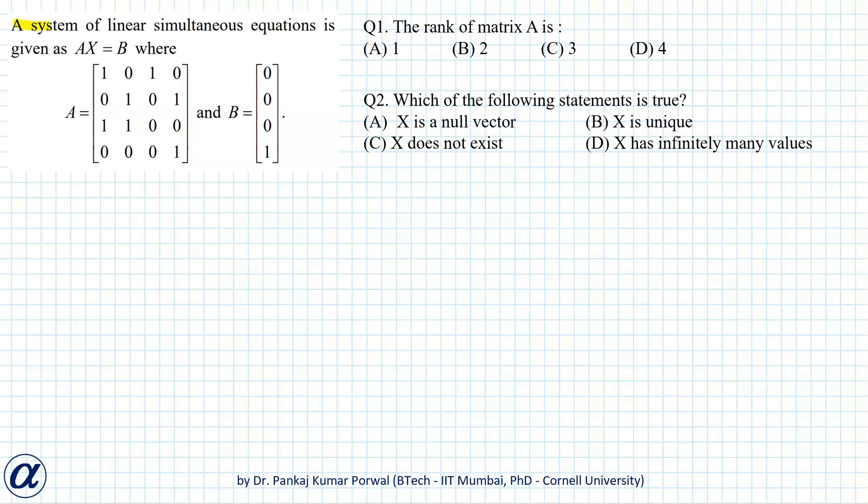In this question, we are given a system of linear simultaneous equations in the form Ax equals B where A is a 4 by 4 matrix and B is a 4 by 1 vector. In the first part we want to find the rank of matrix A.